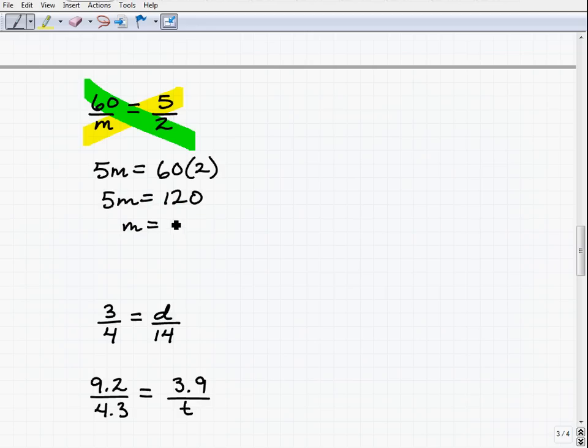So m equals 120 divided by 5. Let's figure that out. 120 divided by 5 is 24. So m equals 24.